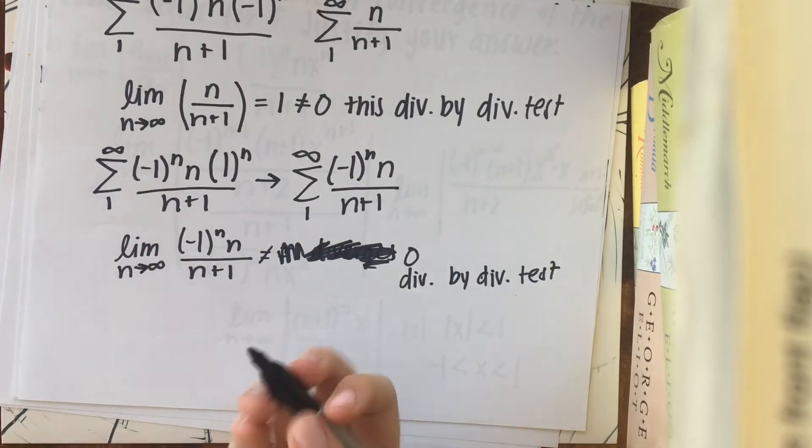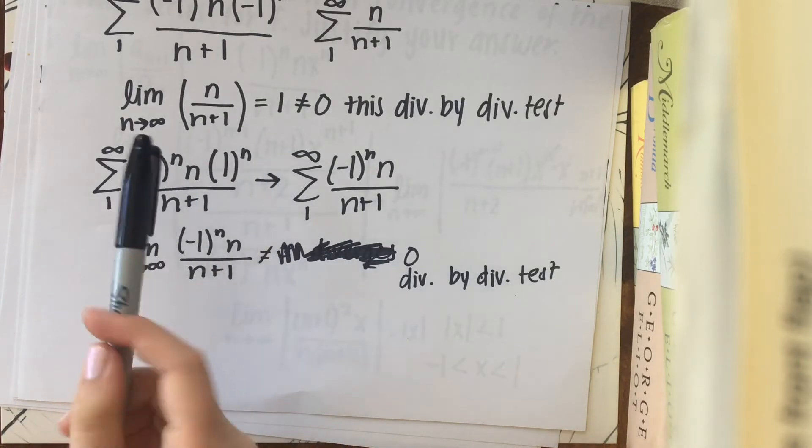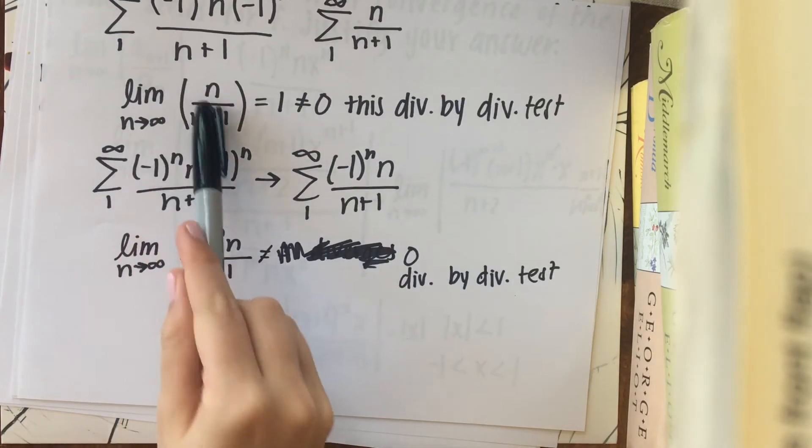And the way that college board writes it is that the series does not converge at x equals 1 and at x equals negative 1. Because the limit of the individual terms is not 0, which is basically the same thing I did because I took the limit of the individual terms.